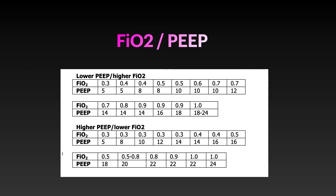One thing the ARDS NET recommends is to use an FiO2-to-PEEP chart. The idea is that if the patient fails to reach proper saturation, instead of cranking the FiO2 endlessly, consider that the saturation may not be great because there are collapsed alveoli that aren't recruited and don't participate in oxygenation. By increasing PEEP, you can recruit these collapsed alveoli. So the idea is: as you increase FiO2, you should also increase PEEP to recruit more alveoli. That's the chart used in the ARDS NET study — it's been validated. We have printed the ARDS NET protocol and it's right next to the machine.